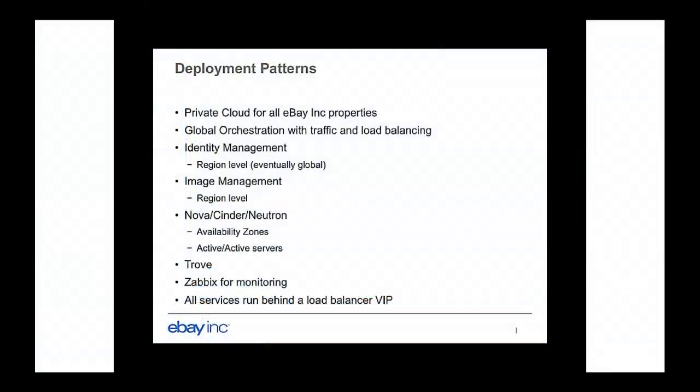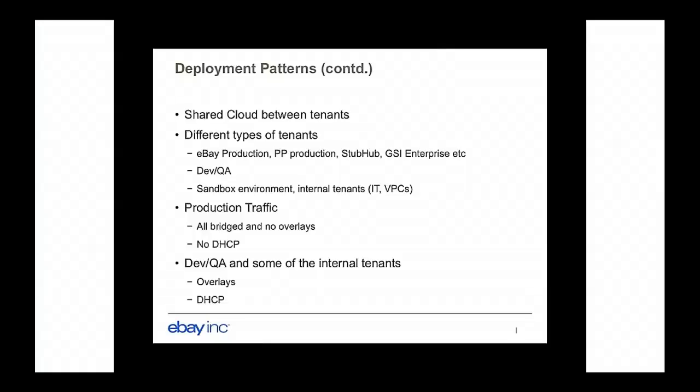I forgot to mention Trove — database as a service — we are also running that, deployed at availability zone level. We use Zabbix for monitoring. Everything is behind a load balancer. It's an interesting mix: some availability zones use hardware, some use virtual. The cloud is shared with multiple tenants and multiple business units. The tenants themselves are also different: production tenants — Marketplaces production, PayPal production, eBay Enterprise — as well as our developers, QA organizations, sandbox environments, and internal IT clouds.